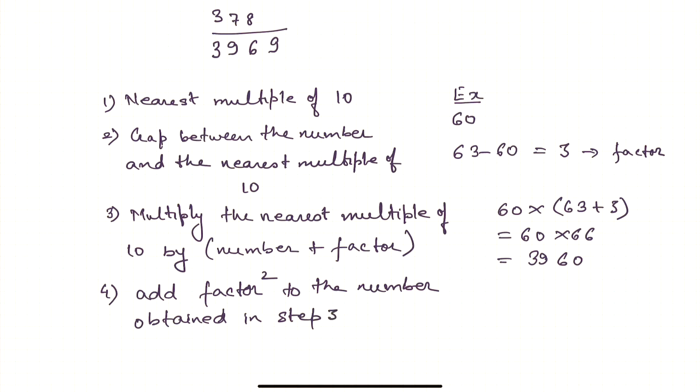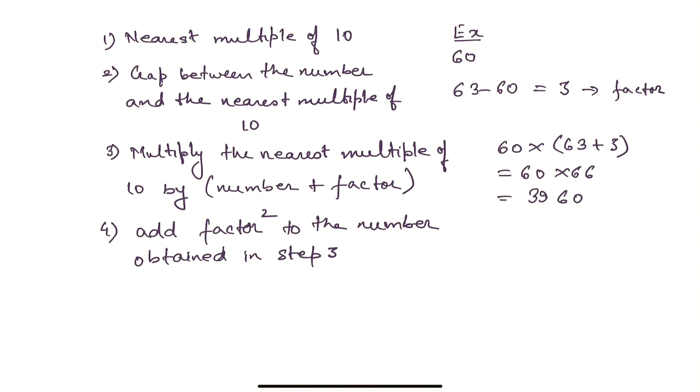Add factor squared to the number obtained in step 3. So here in this case it will be 3960 plus factor squared is 9, so the answer is 3969.